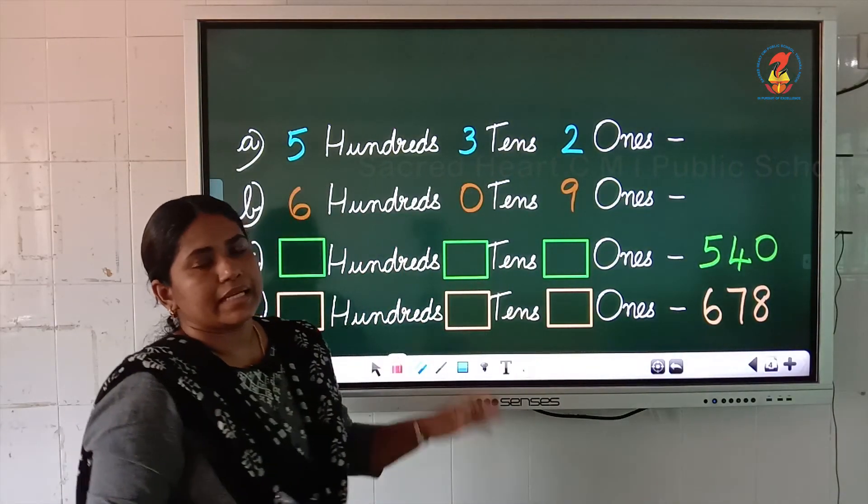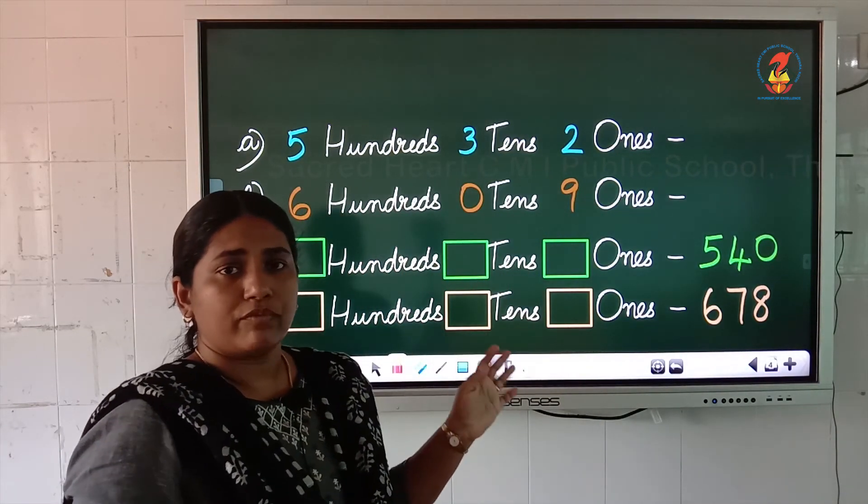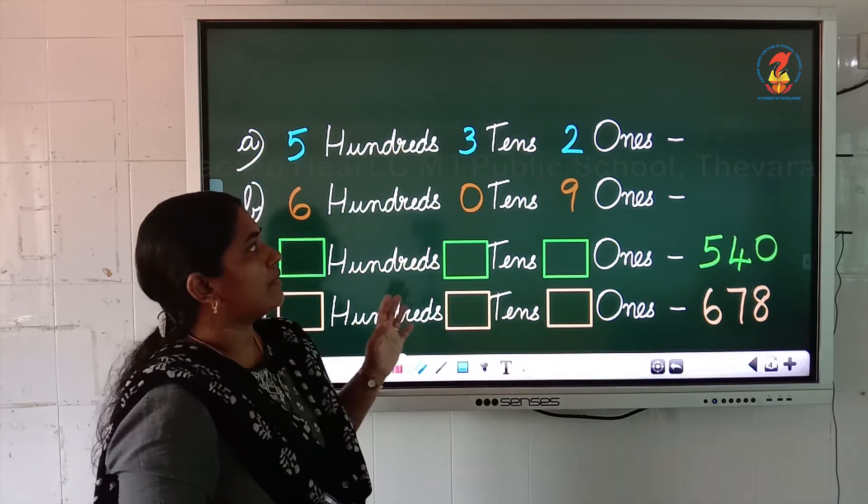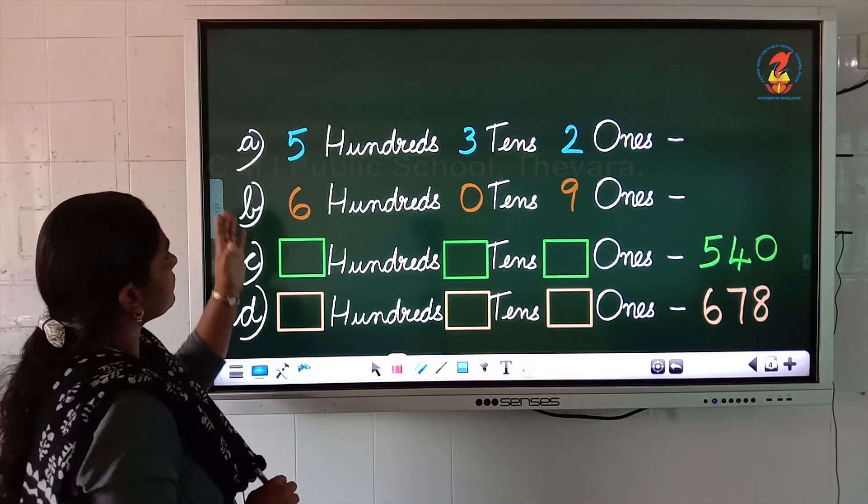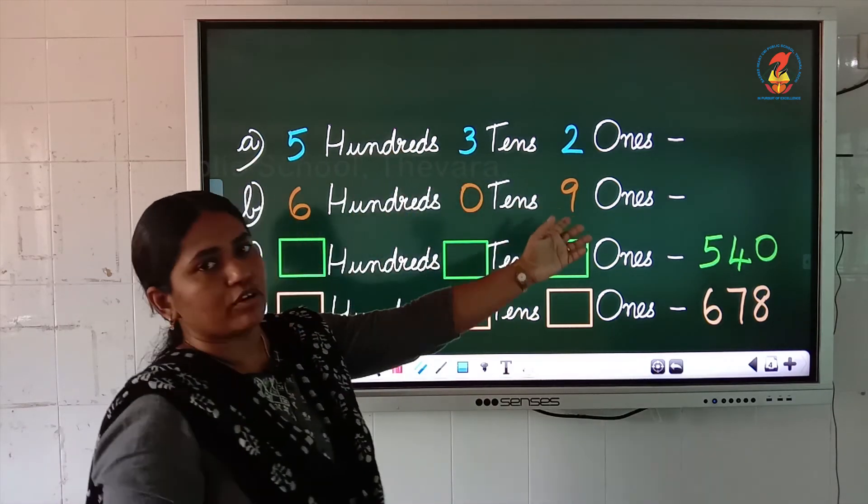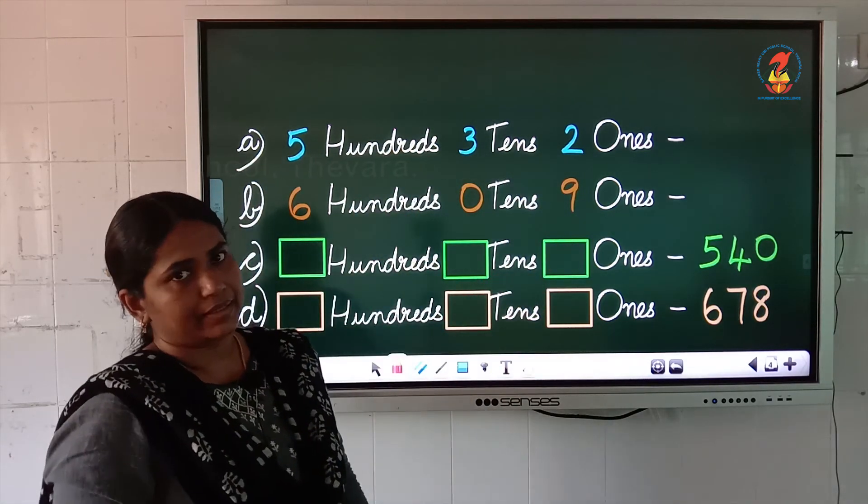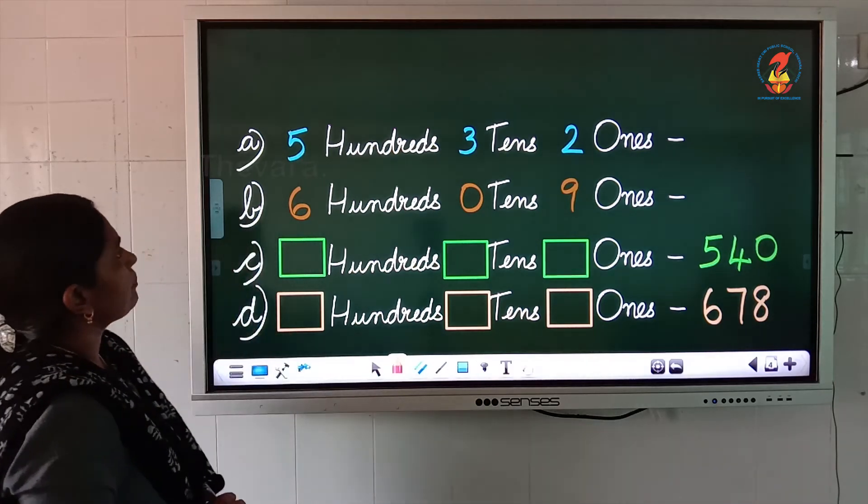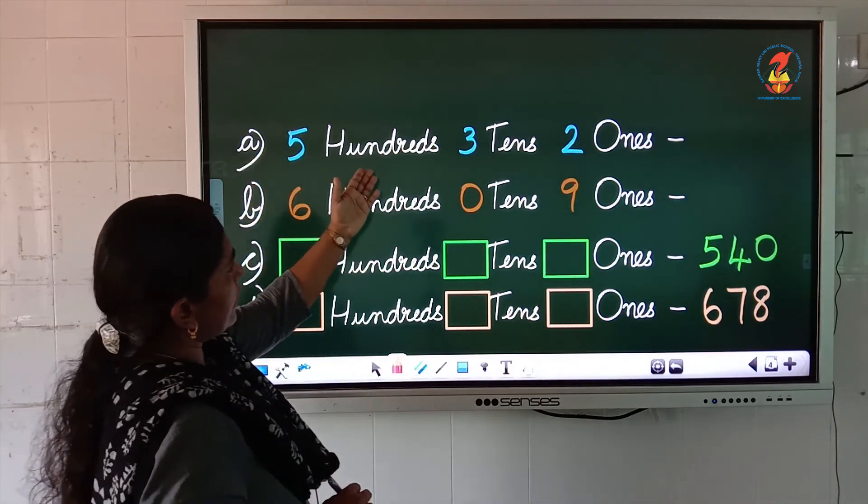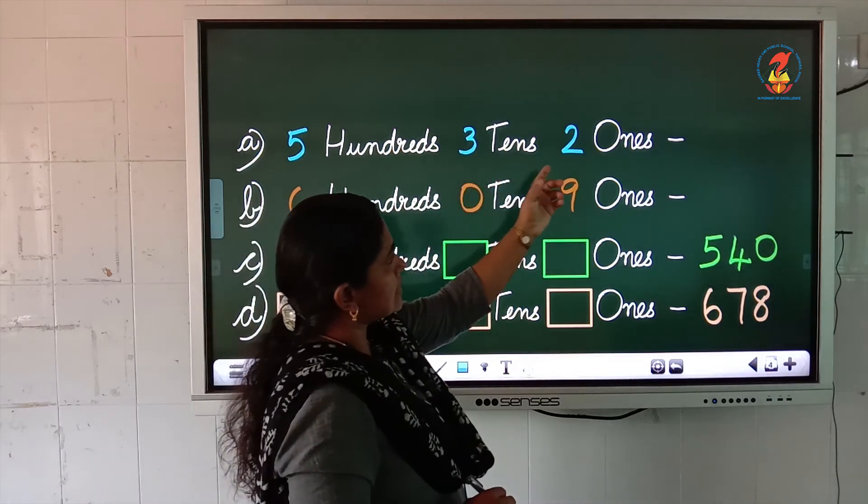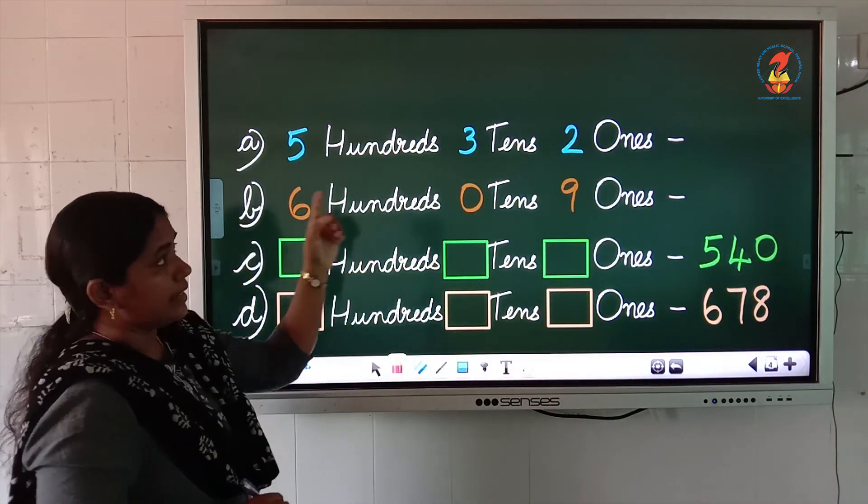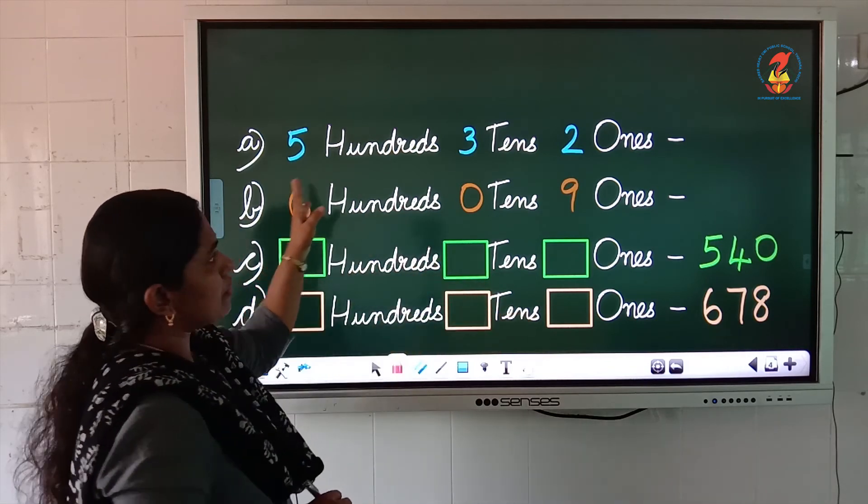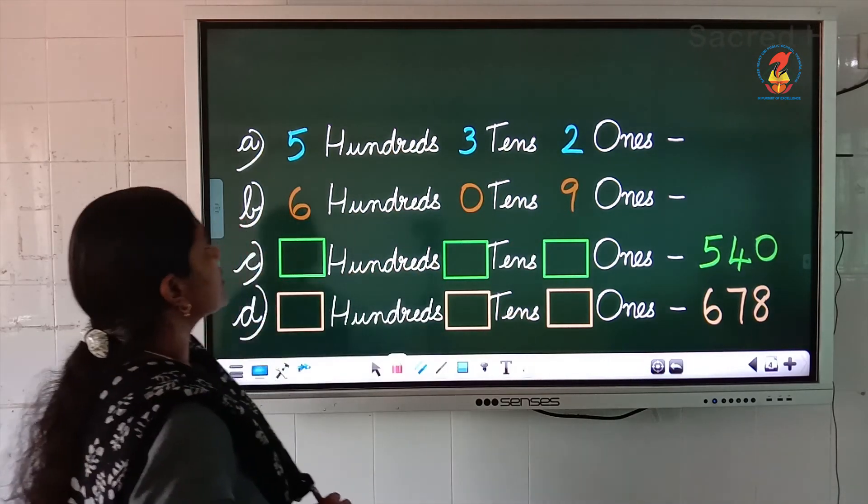Now, using these numbers from 501 to 700, we will do some questions now. All of you look at the board children. Here, the expanded form of some numbers are given here. What is the first question? 500, 3, 10, 2, 1. Children, you have to write the number. The expanded form is given here.